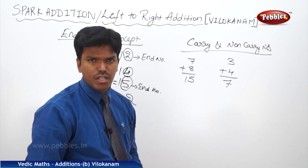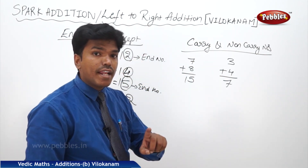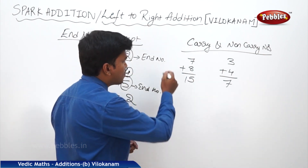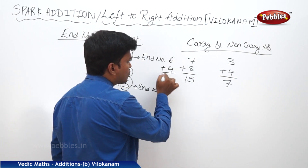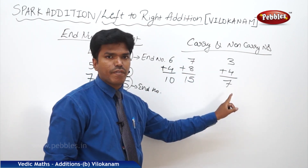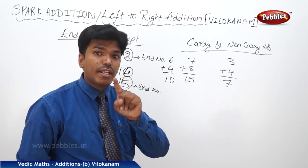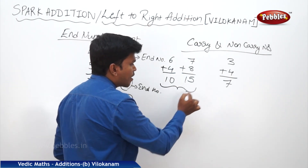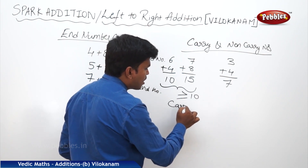Whenever you add any two digits and get a sum of 10 or more than 10, those numbers are called carry numbers. For example: 6 plus 4 equals 10, and 7 plus 8 equals 15 — both are carry numbers because their sum is greater than or equal to 10.